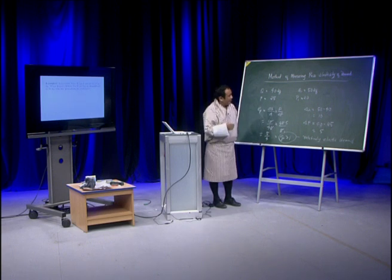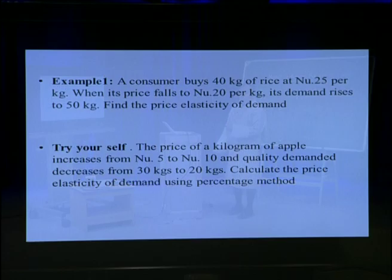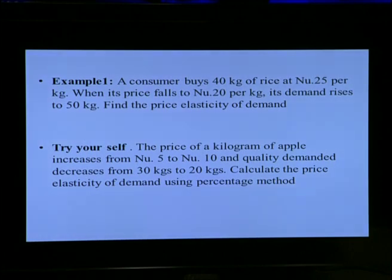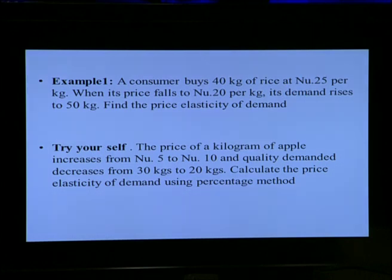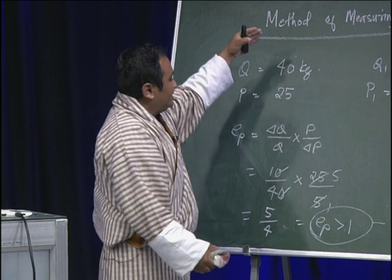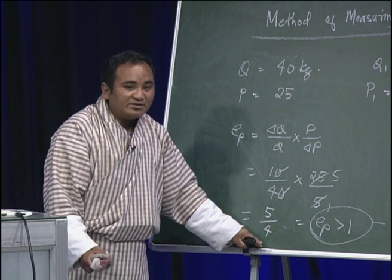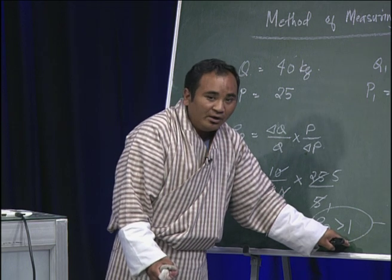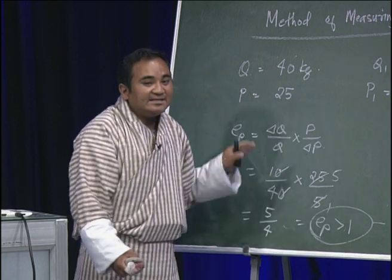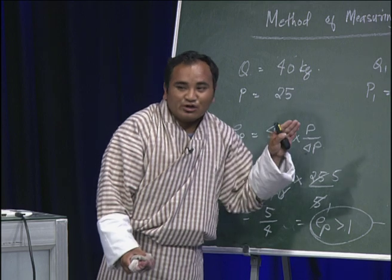Now you have one more question to try yourself. When the price of a kilogram of apple increases from Nu 5 to Nu 10, quantity demanded decreases from 30 to 20 kg. Calculate the price elasticity of demand using the percentage method. While solving this, keep in mind: the formula to calculate price elasticity of demand, the final value of elasticity, and the interpretation of the numerical value.